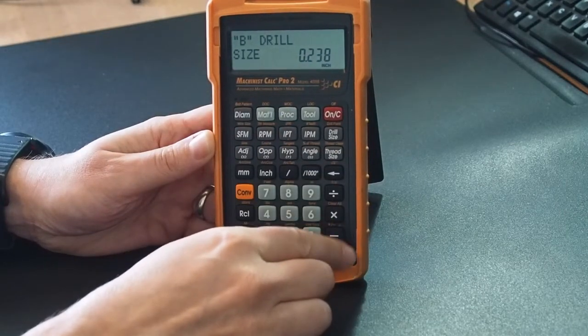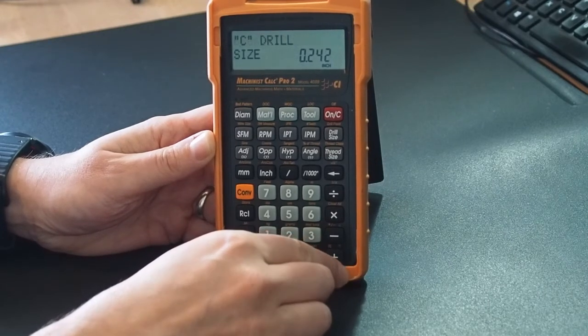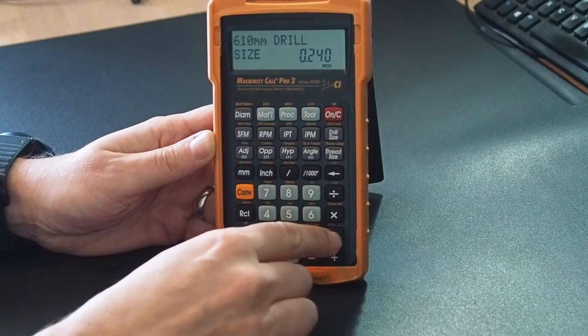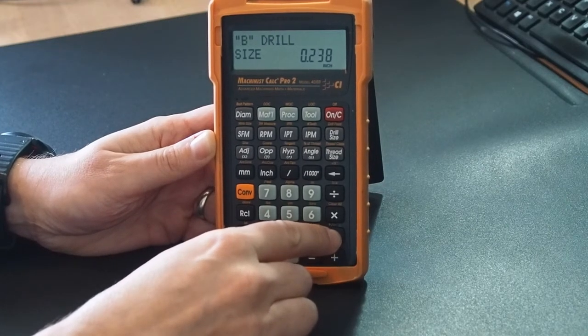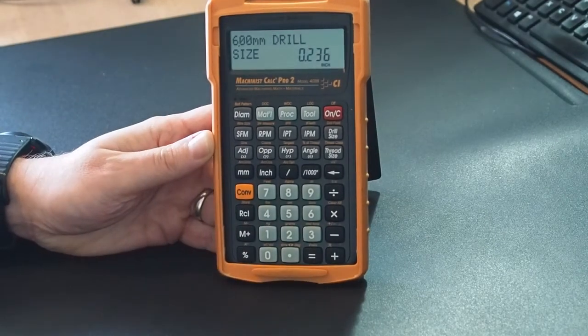We can either press plus to go up the drill bit sizes, so I'm just going to go up a couple - there we've got up to C. Or I can press the minus and drop back down. So there's our B size, and if I press minus again we're down to our original 6mm drill bit.